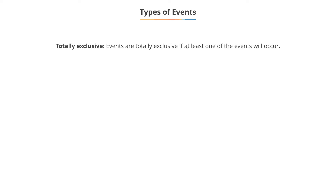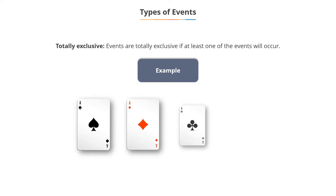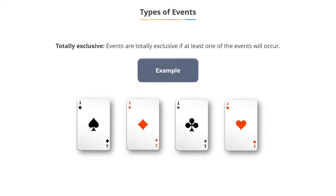Totally exclusive: here, at least one of the events will occur. The events that a card drawn from a deck of 52 cards is a spade, diamond, club, or heart are clearly totally exclusive.